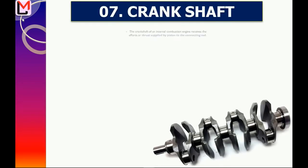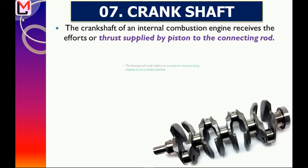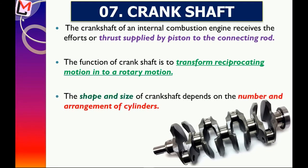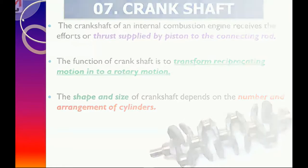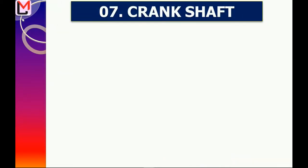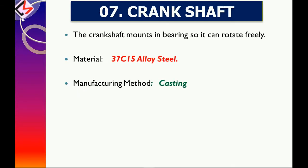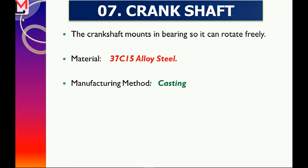Now we will learn about the crankshaft. It receives the thrust supplied by the piston through the connecting rod. The main function of the crankshaft is to transform reciprocating motion into rotary motion. The shape and size of the crankshaft depends on the number and arrangement of cylinders. It is mounted in bearings so that it can rotate freely, and is made from 37C15 alloy steel using the casting process.